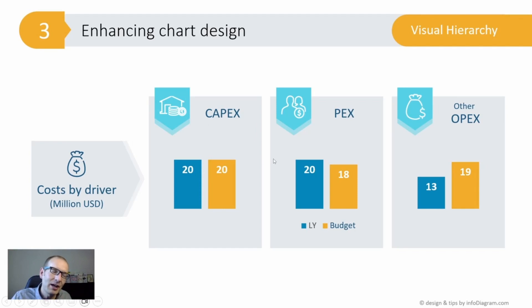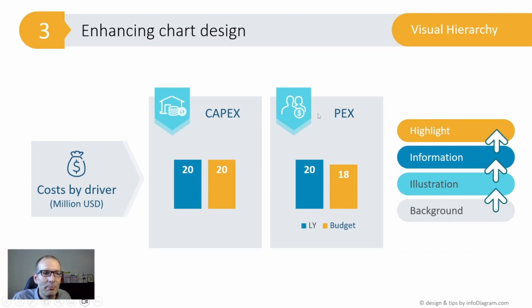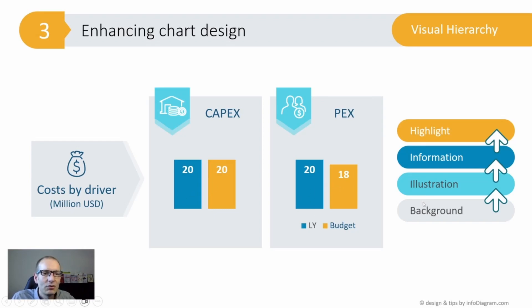With every element you add, remember about visual hierarchy — to keep the readability and meaning of your chart. There are parts you want to highlight; in our case, the orange color is the most important, so I'll use one color just for that. Then there's an information level — the other value to compare, like last year's figures — shown slightly lighter. For the background, I use the lightest color. When choosing colors, maintain a visual hierarchy.